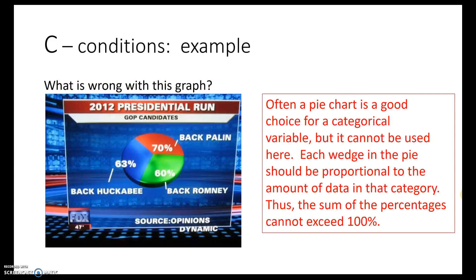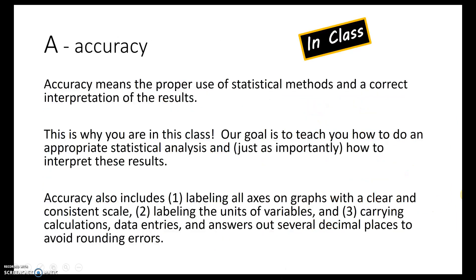Next, check Accuracy — the proper use of statistical methods and correct interpretation. This is one of the whole reasons you take this class: you are presented with conclusions from data all the time, and we want to give you a toolkit to evaluate whether someone did something reasonable. Accuracy includes things like labeling axes on graphs with a clear and constant scale, labeling units on variables, and carrying calculations and data entries out over several decimal places to avoid rounding errors.